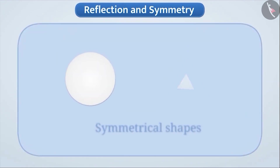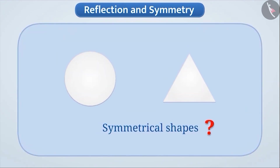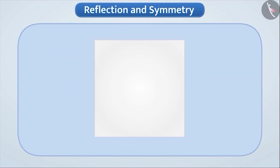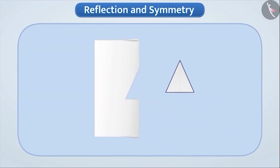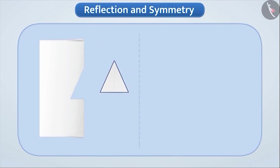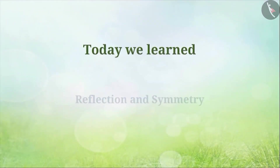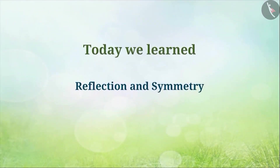Have you tried to make symmetrical shapes with paper? If not, do try. Take a piece of paper and fold it in half lengthwise. Then draw half part of a pattern and cut it. Once you unfold the paper, you will obtain a full shape. If you fold a paper twice and cut a shape, you will see a symmetric pattern. So today, we learned reflection and symmetry. We will see some examples related to this in the next video.